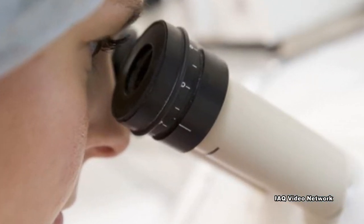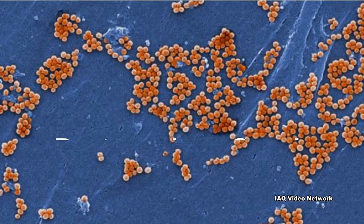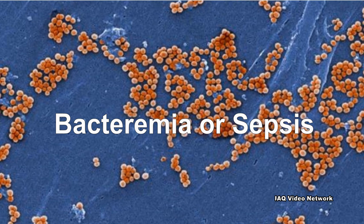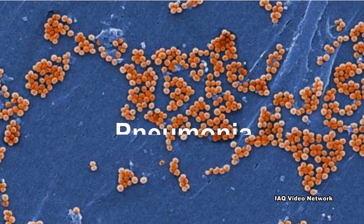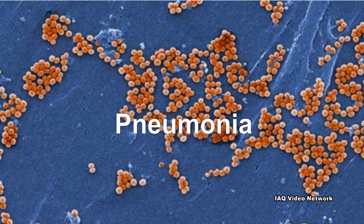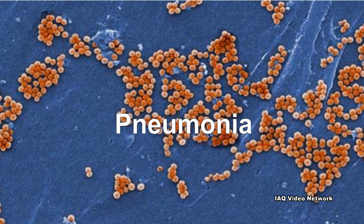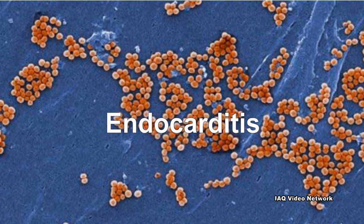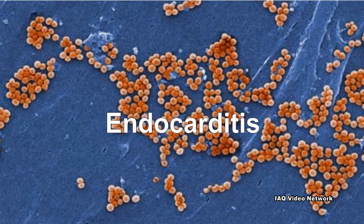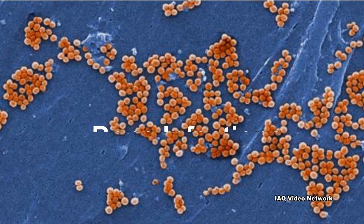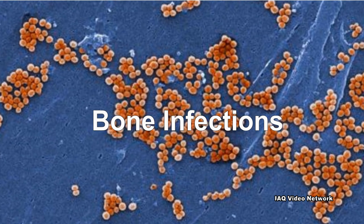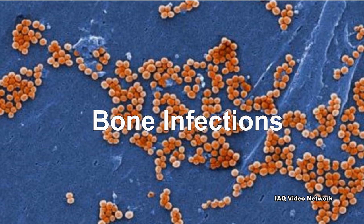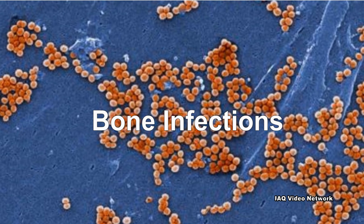These infections may include bacteremia or sepsis, when bacteria spread to the bloodstream; pneumonia, which predominantly affects people with underlying lung disease; endocarditis, which can lead to heart failure or stroke; and bone infections, which can be caused by staph bacteria traveling in the bloodstream or introduced by direct contact following trauma.